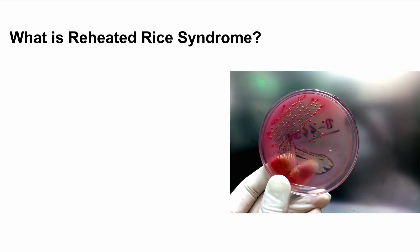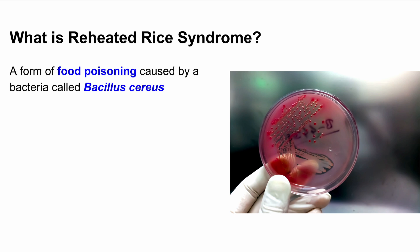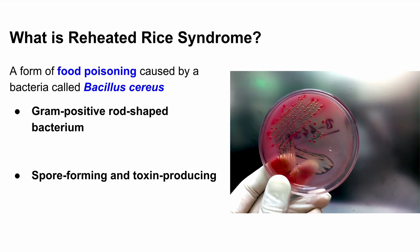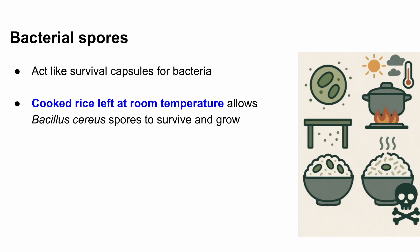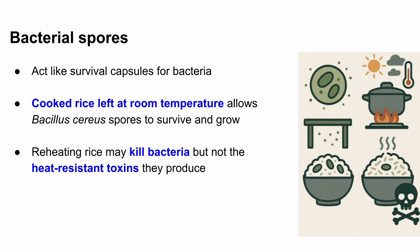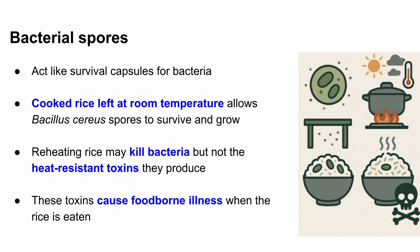What is Reheated Rice Syndrome? This condition is a form of food poisoning caused by a bacteria called Bacillus cereus. Bacillus cereus is a gram-positive, rod-shaped bacterium — it appears purple when stained under a microscope and looks like a little rod or stick. It's also spore-forming and toxin-producing, which is key to how it causes illness. Spores are like survival capsules for bacteria — they can survive extreme heat. So when rice is cooked and left out at room temperature, the spores survive. If the rice is later reheated and eaten, the heat may kill some bacteria but not the heat-resistant toxins already produced, and those toxins cause the illness.